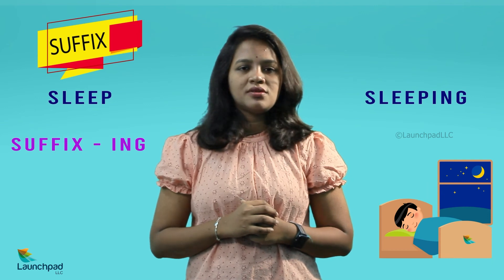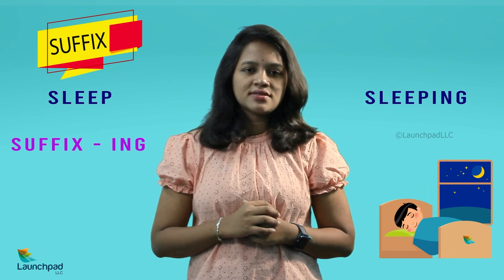Example 3: the root word 'sleep' — when we add the suffix '-ing' to the root word 'sleep', it changes into 'sleeping', and the grammatical change here is the -ing form, which is continuous tense. Thank you.